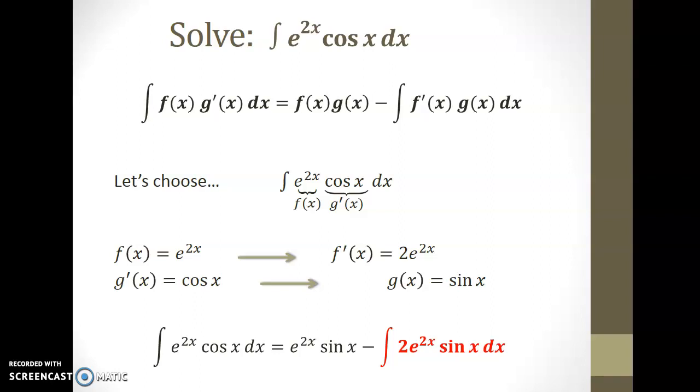f is e to the 2x and g is sin x. Then we have a new integral which is the product of f prime, 2e to the 2x, times g, which is sin x. I've highlighted in red this new integral because it is still the product of a trig function and an exponential. Therefore, it looks like we're going to have to apply integration by parts again.